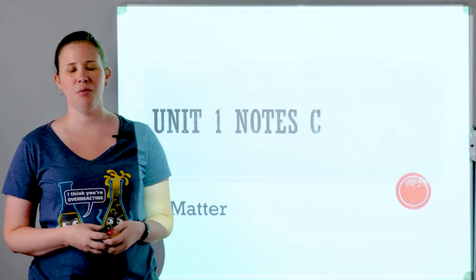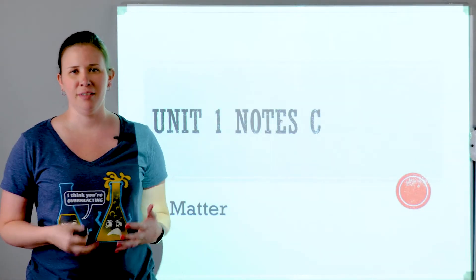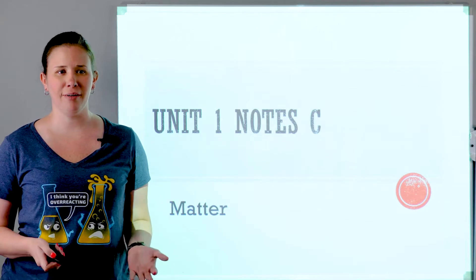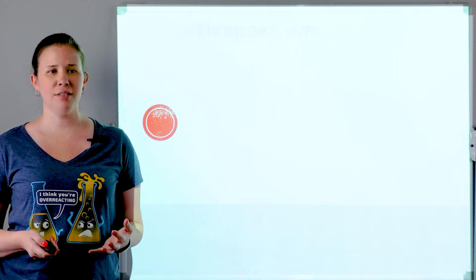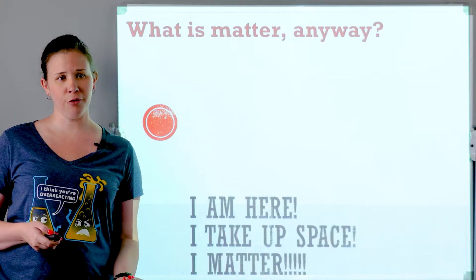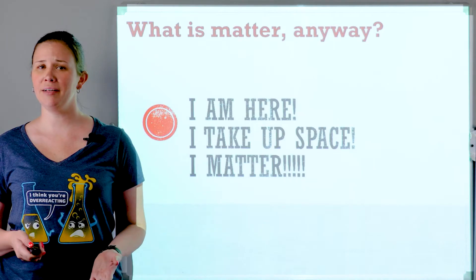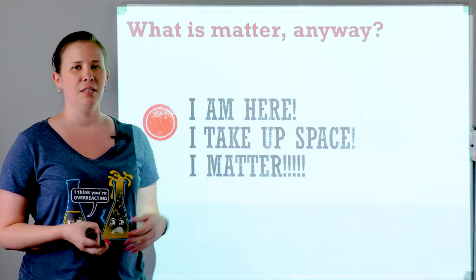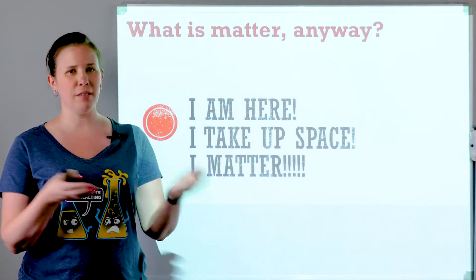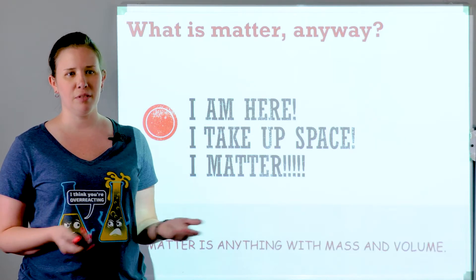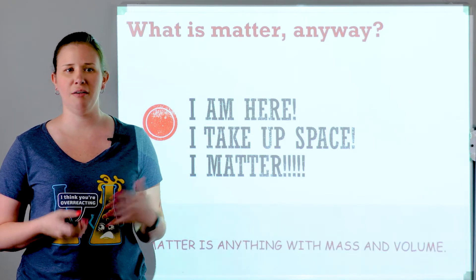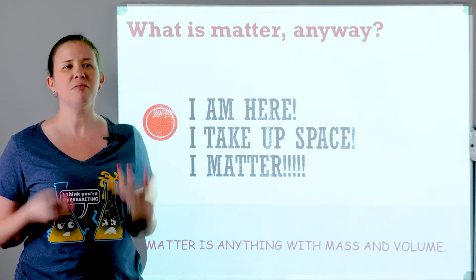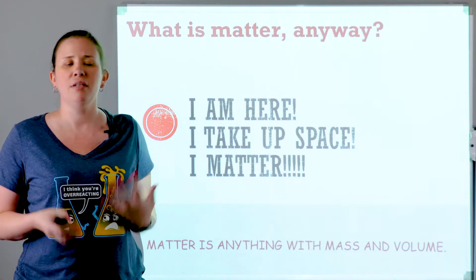Hey guys, welcome to Unit 1 Note C. Today we're going to go over a few important classifications of matter. Matter is anything that has volume and mass. Typically the way this is phrased in books is that it takes up space and is made of matter, basically meaning it has mass and volume. Anything that is actually an object made of stuff is matter.